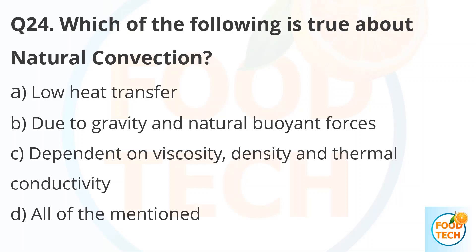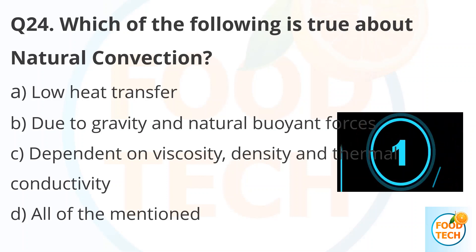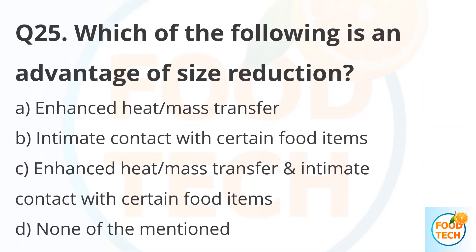Question 24. Which of the following is true about natural convection? A. Low heat transfer. B. Due to gravity and natural buoyant force. C. Dependent on viscosity, density and thermal conductivity. D. All of the mentioned. Answer D. All of the mentioned. Question 25. Which of the following is an advantage of size reduction? A. Enhanced heat and mass transfer. B. Estimated contact with certain food items. C. Enhanced heat and mass transfer and estimated contact with certain food items. D. None of the mentioned. Answer D. None of the mentioned.